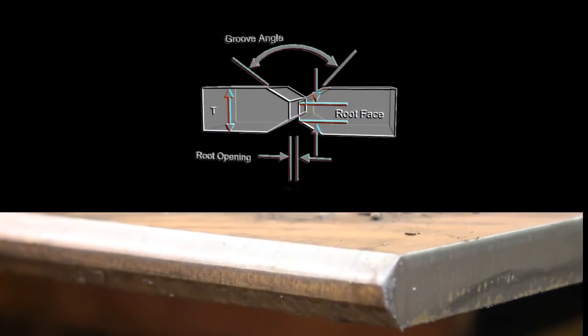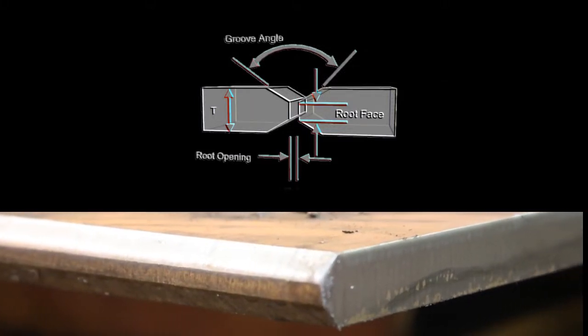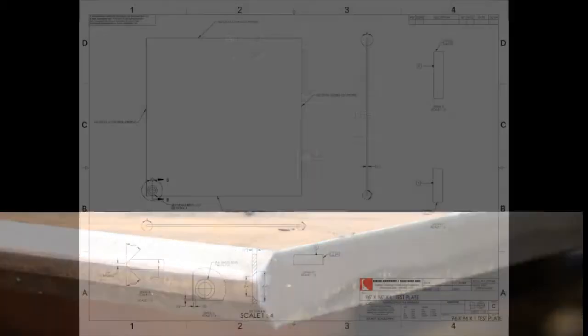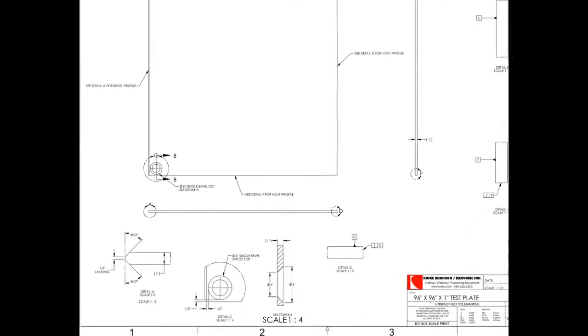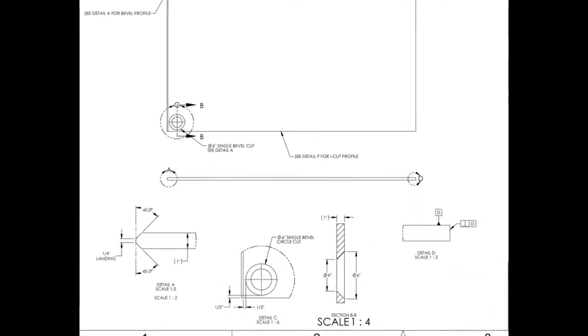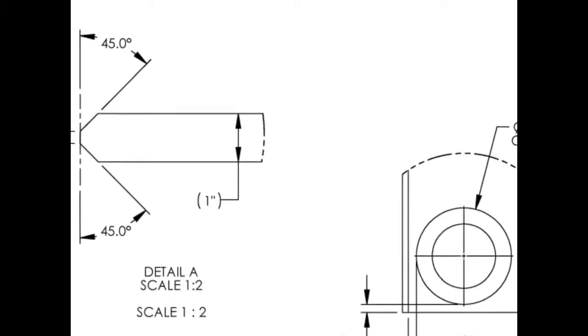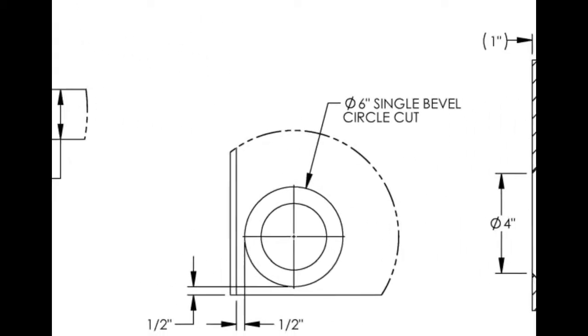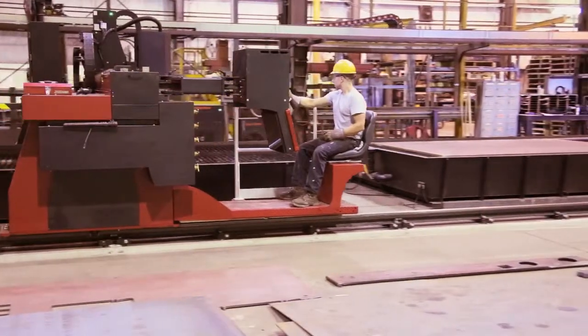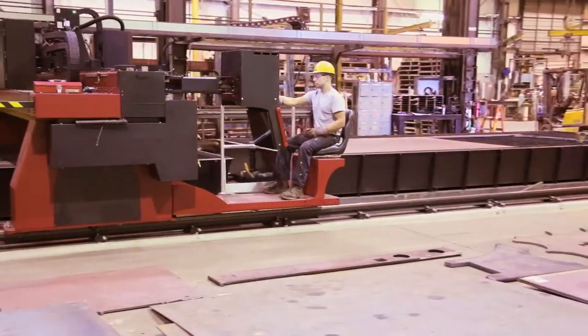Various weld preparation bevels can be done including X, Y, V, and K type. Let's take a look at a typical customer part. This part has a K beveled edge and a V beveled hole. Special cutting machine software is used to program the CNC machine code for the VersaGraphic Stream with a 3DLT bevel head.